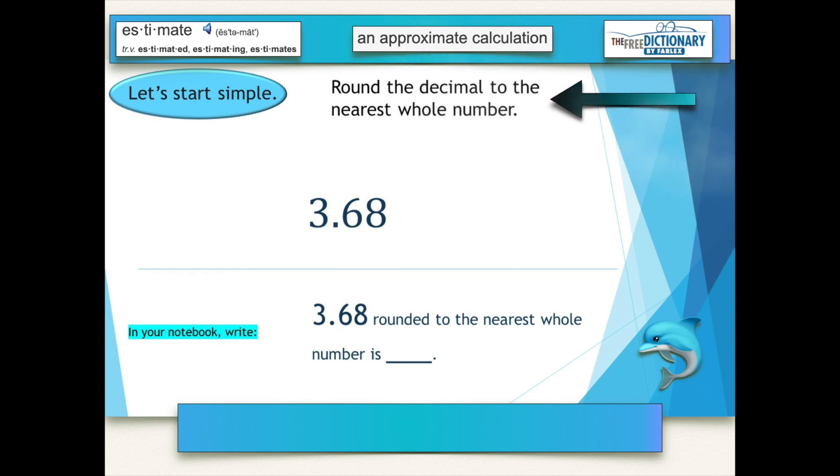Our job on this one is to round the decimal to the nearest whole number. Three and sixty-eight one hundredths rounded to the nearest whole number. And again, just look at that first number after the decimal. This time our job is to round three and five tenths, or three and a half to the nearest whole number.